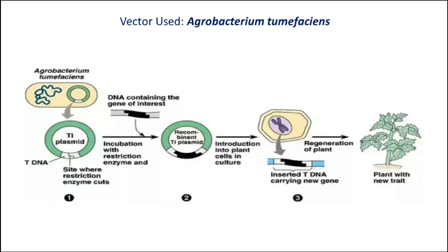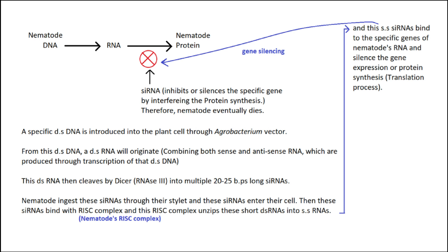Next, we'll study it in more detail. This is a schematic diagram of introduction of foreign DNA or gene of interest through an Agrobacterium vector, where a Ti plasmid is used to carry the gene of interest. It will incorporate into a wild-type host plant and make it transgenic.